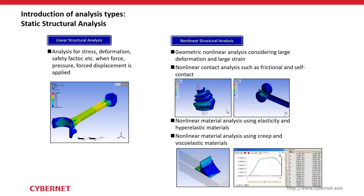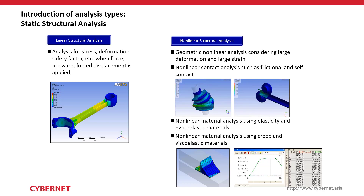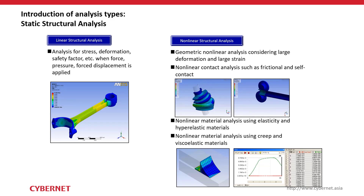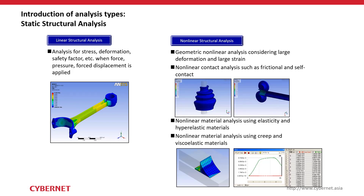For structural analysis, you evaluate stress, deformation, and factor of safety when loads — such as force, pressure, or displacement — are applied to your structure. Nonlinear structural analysis is similar but includes the nonlinearity of the structure, which can come from three sources. The first is geometric nonlinearity — as geometry deforms to a certain extent, the structure becomes stiffer, so stiffness is no longer constant throughout the simulation.